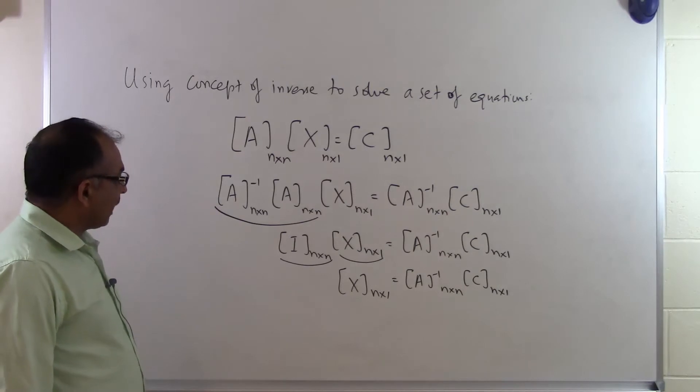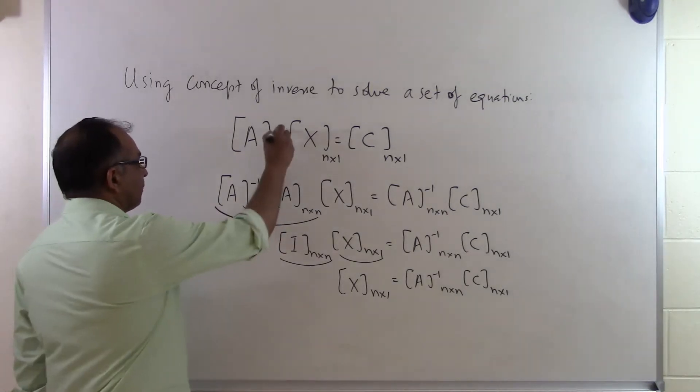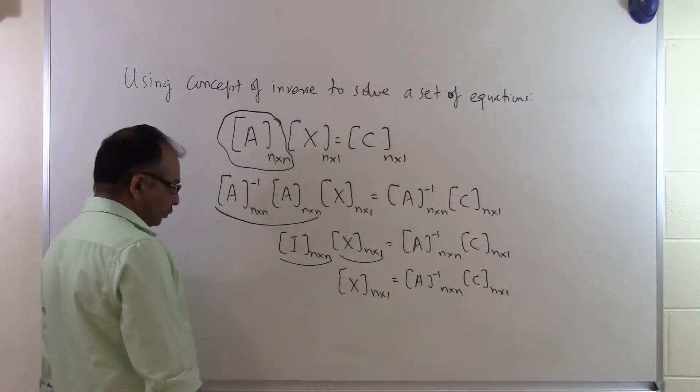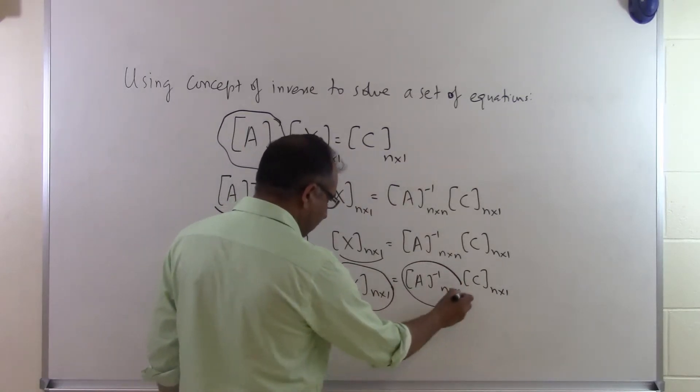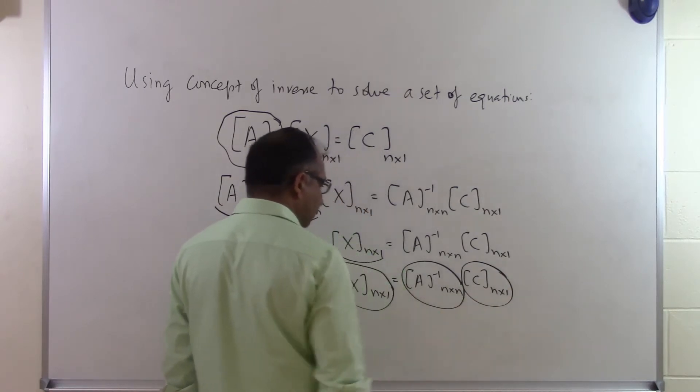So what we are basically saying is that if somebody gives you the inverse of the coefficient matrix, you should be able to easily find out what the solution vector is because all you have to do is write down the inverse matrix and put the C matrix right here, multiply the two matrices.